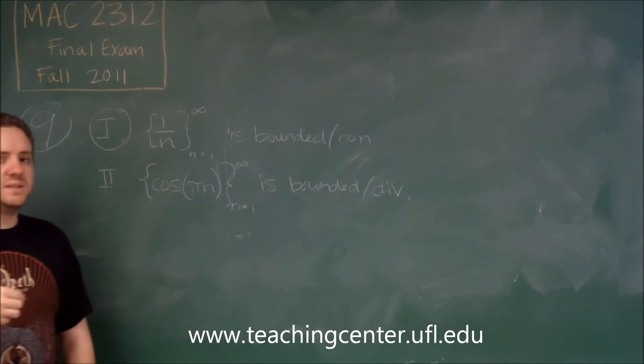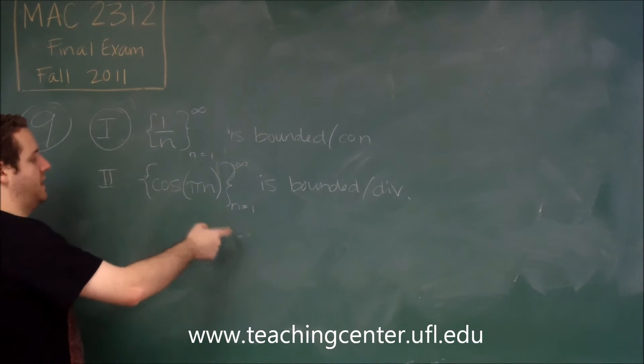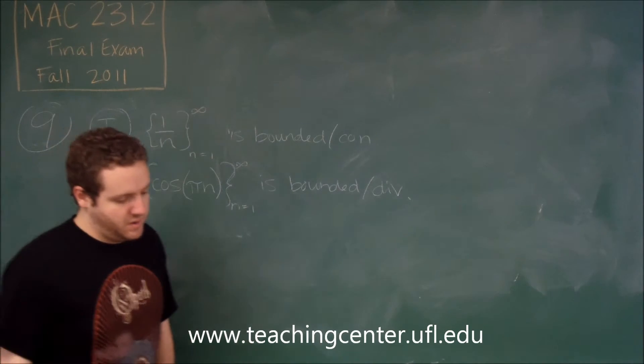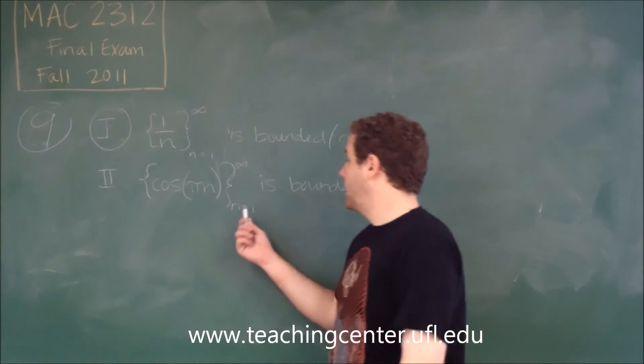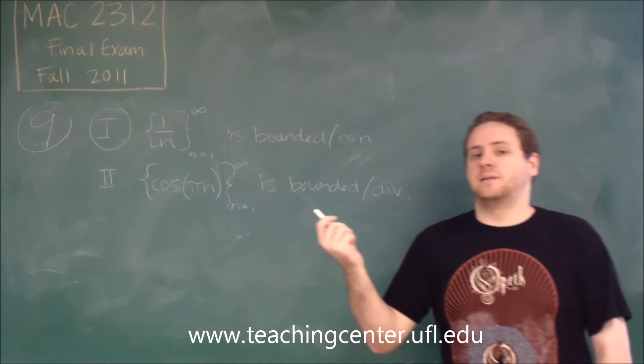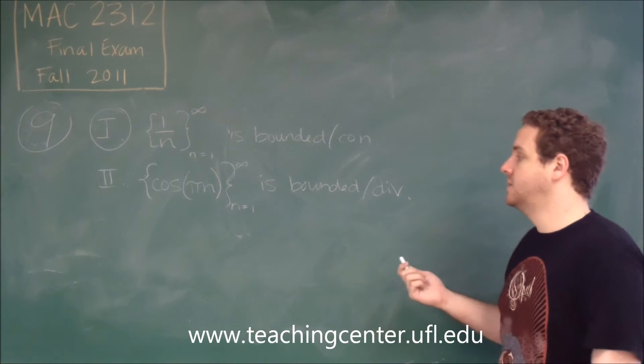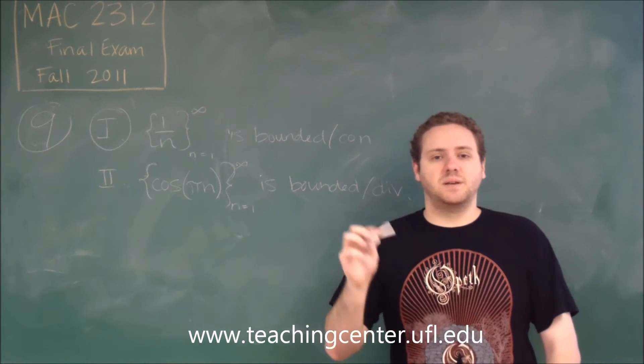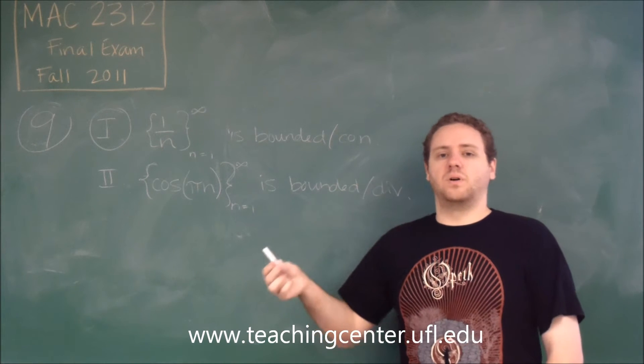Is this bounded? Well, let's think about what happens. When you plug in n equals one, we get cosine of pi, which is negative one. And when we plug in n equals two, we get cosine of two pi, which is one. And this is just going to alternate. It's going to keep going negative one, one, negative one, one, on and on.